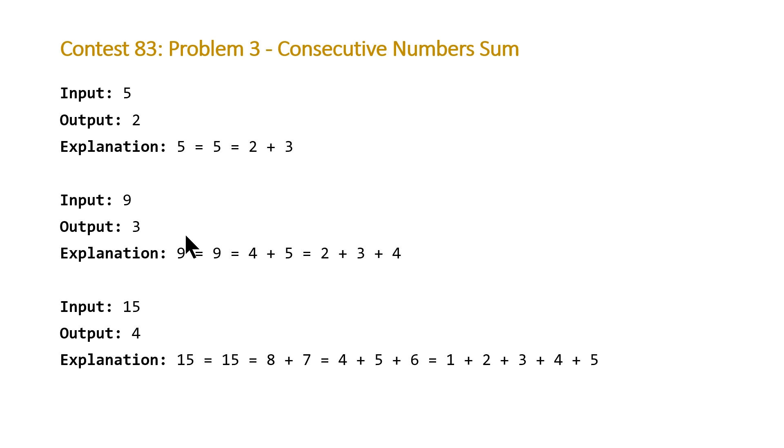For our second example we have 3: the number itself 9, 4 plus 5 equals 9, and then 2 plus 3 plus 4 equals 9. Then our last example 15, our output is 4: the number itself, 8 plus 7 is one sequence, 4 plus 5 plus 6 is another sequence, and then 1 through 5.